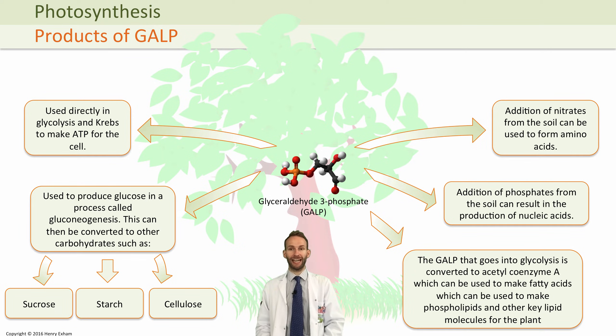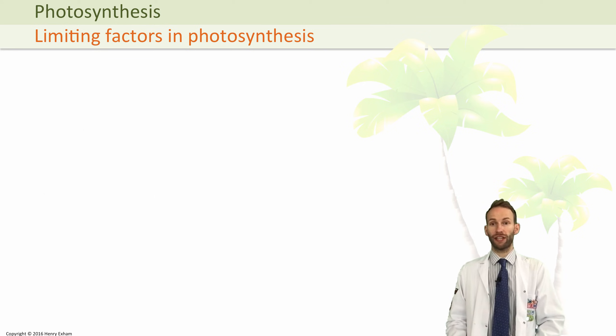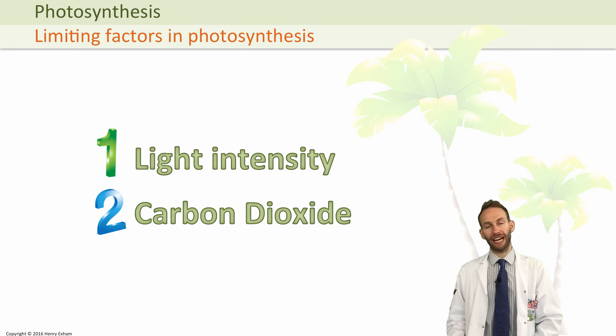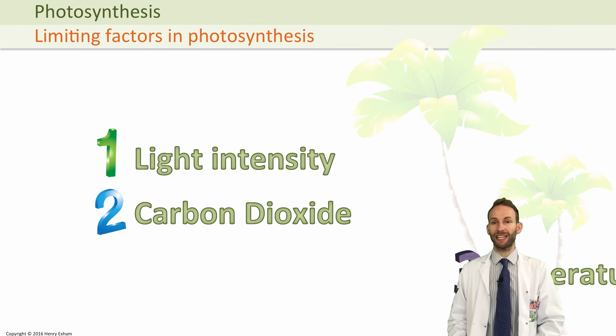Now photosynthesis is a chemical reaction. It needs certain things to work effectively. There are three factors we should consider when looking at the rate of photosynthesis: light intensity, the level of carbon dioxide needed in the Calvin cycle, and temperature.